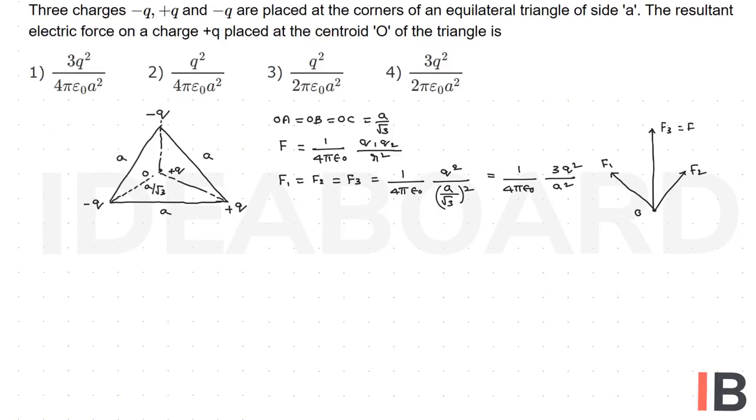So consider F3 is equal to F, F1, F2, they are making an angle 120 degree, consider their resultant, that is the F4.